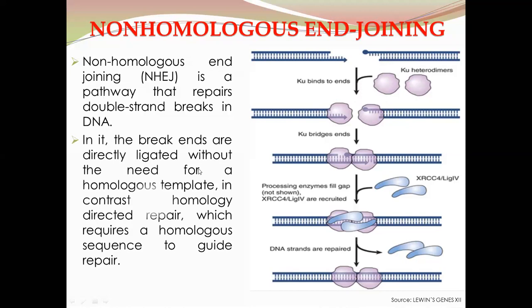In non-homologous end joining, the break ends are directly ligated without the need for a homologous template, in contrast to homology-directed repair. In homology-directed repair, a homologous sequence is needed to guide repair. But the non-homologous end joining repair system does not need any homologous template.